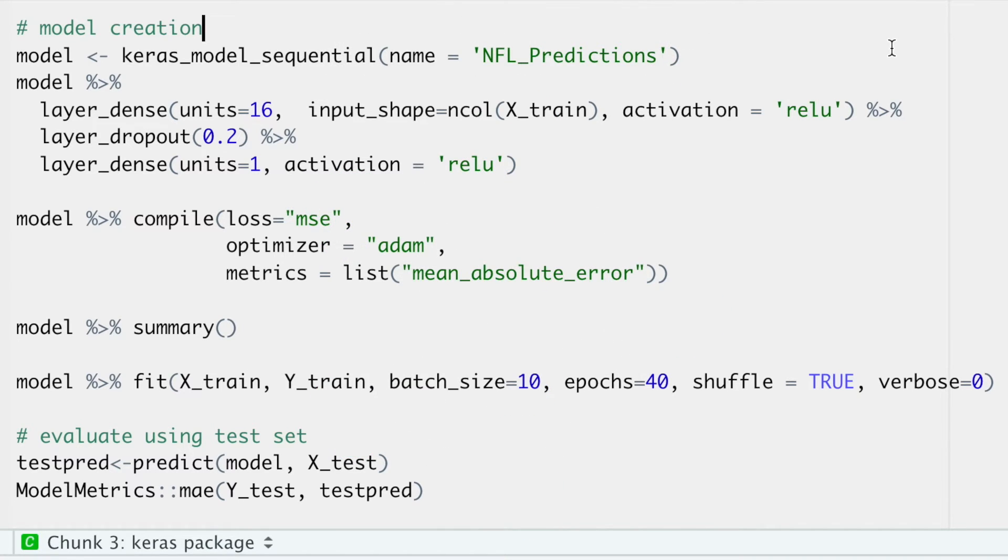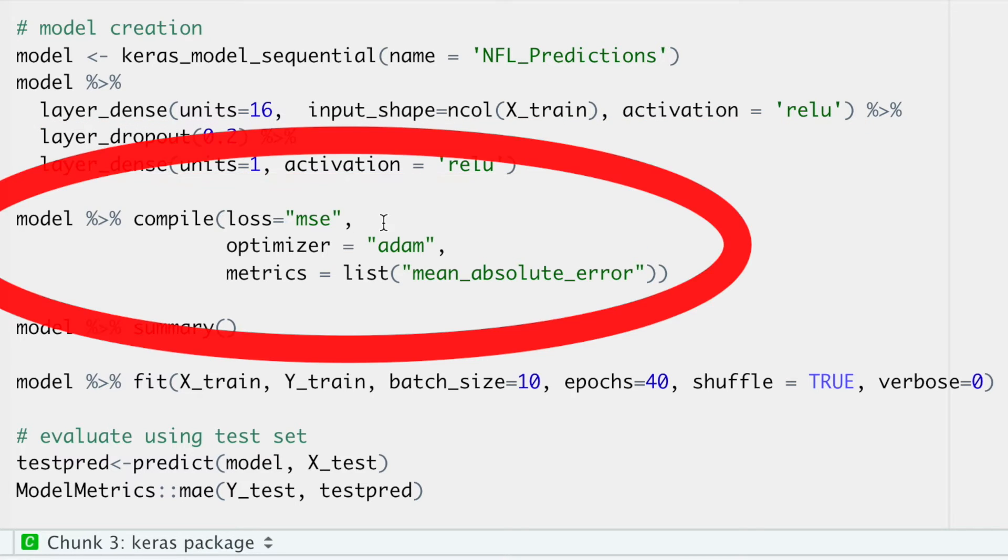This model uses two layers using the very common ReLU activation function for each one, and the first layer has 16 nodes and the output layer has one node for one output. Then we compile the model specifying the loss function, optimizer, and metrics. The value of these depends on if you're doing a classification or regression, and we're doing a regression.